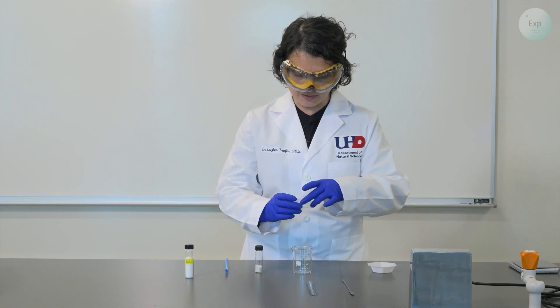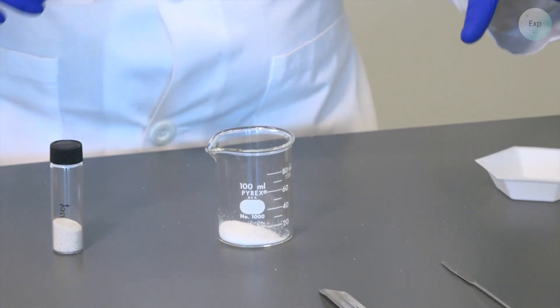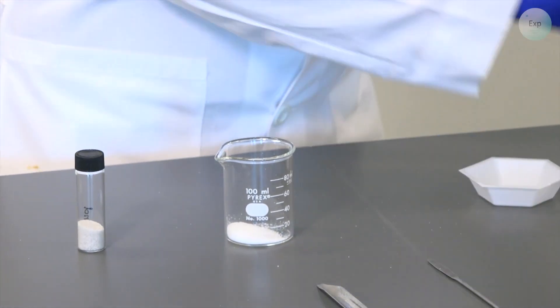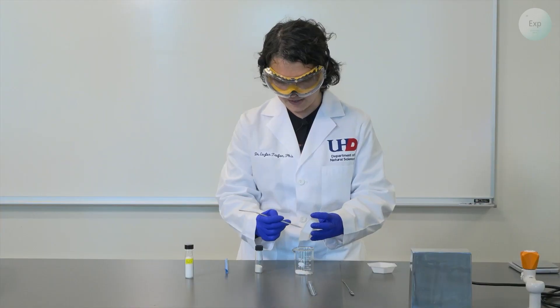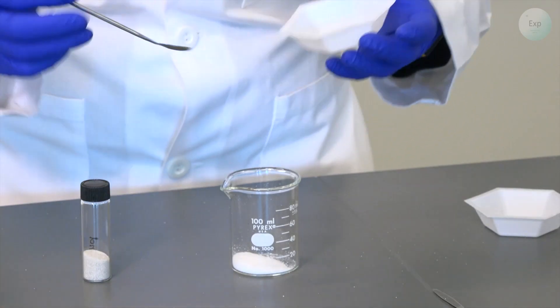Next, I am going to take my salt and transfer it into the beaker. And if something is stuck to the sides of the weighing boat, I can use my spatula that I used for the sodium chloride measurement to transfer everything into it.